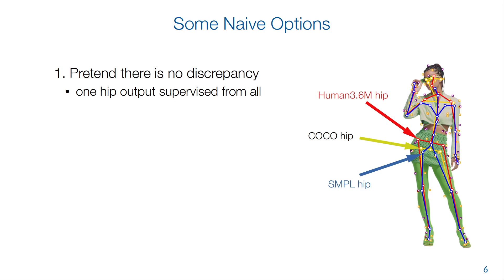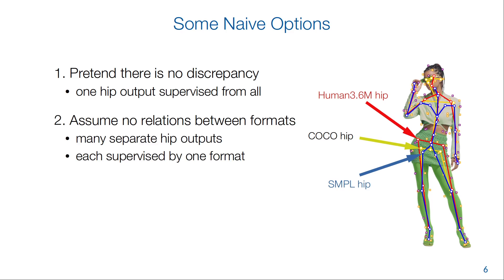On the one hand, we could just pretend, for example, that any joint named hip is the same point on the body. But then we would blur the different hip points together within the model. On the other extreme, we could predict the different formats on separate output heads, as in multitask learning, without assuming any relations between them.